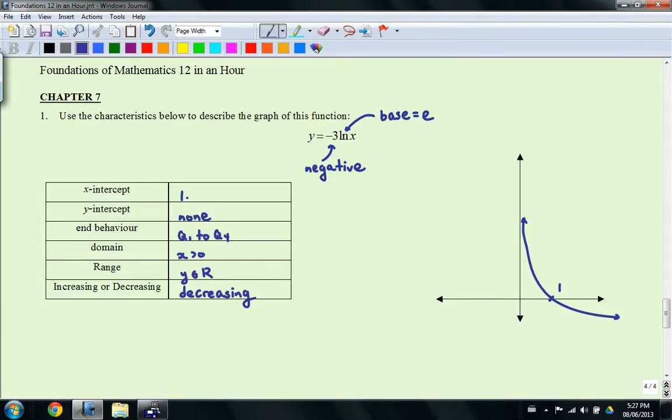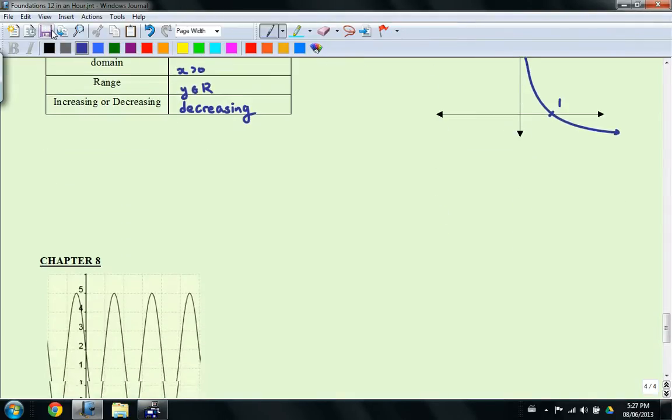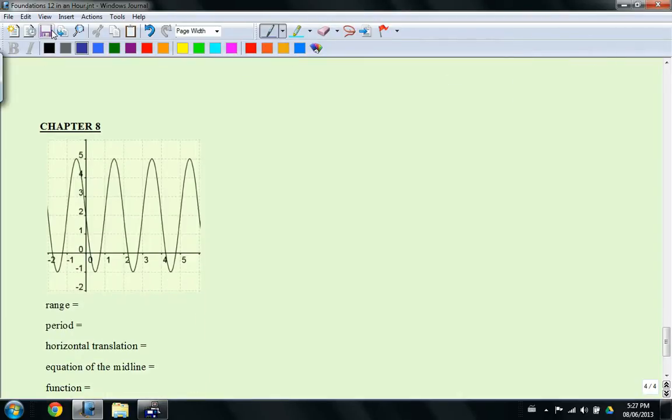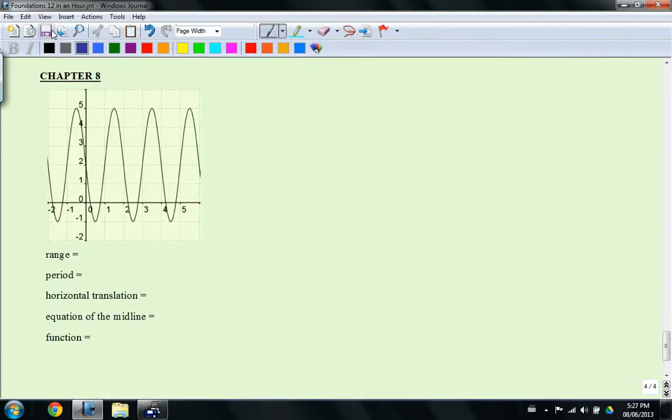So there's one more to go. Chapter 8. We're just going to talk about range, period, horizontal translation and the equation of the midline. The first one is the range. It's pretty straightforward.